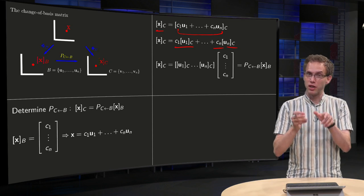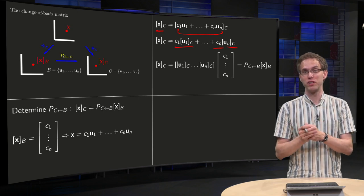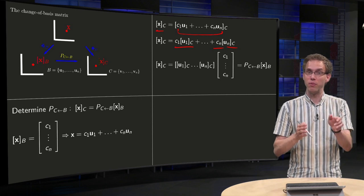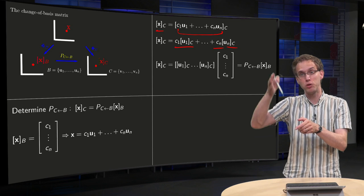But u_1, that's a nasty vector, but u_1 in the basis C is the coordinate vector with respect to C, so that's again a normal vector in R^n. So we have c_1 times a normal vector plus c_2 times a normal vector up till c_n times a normal vector.